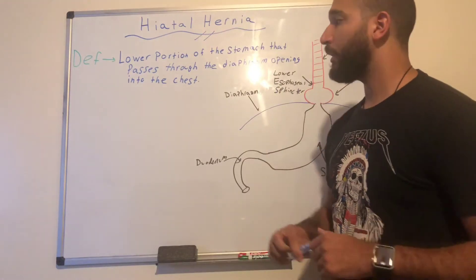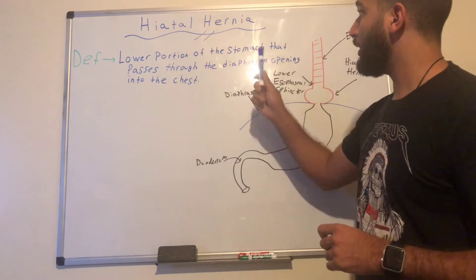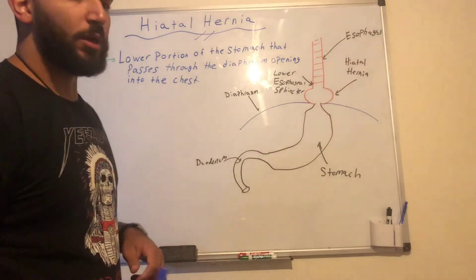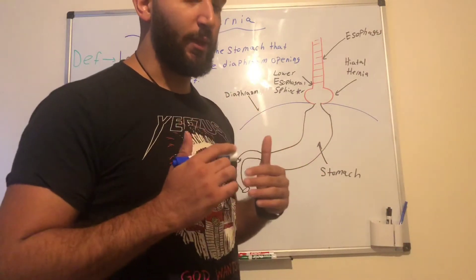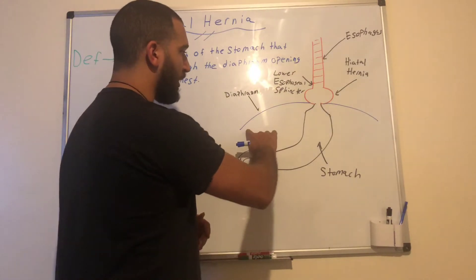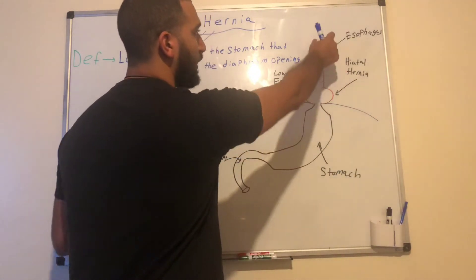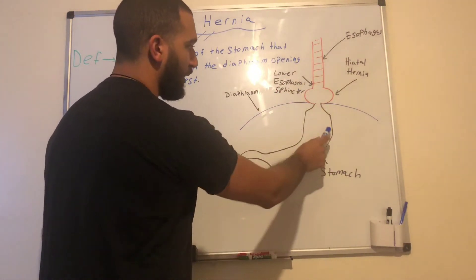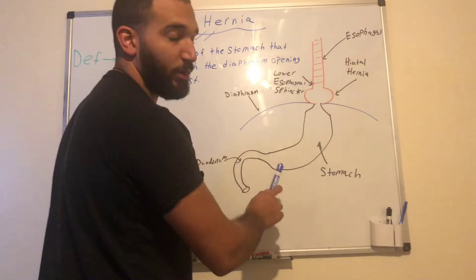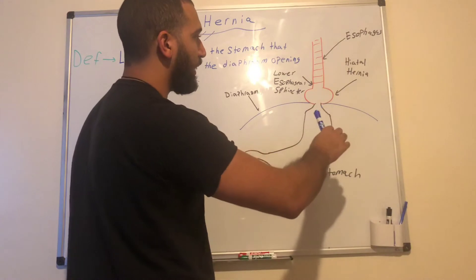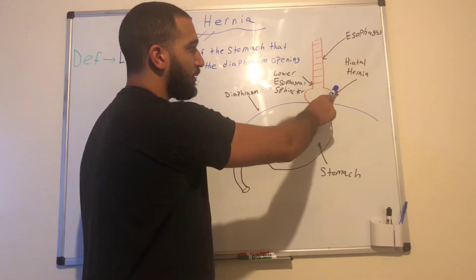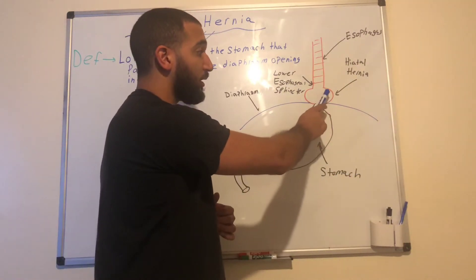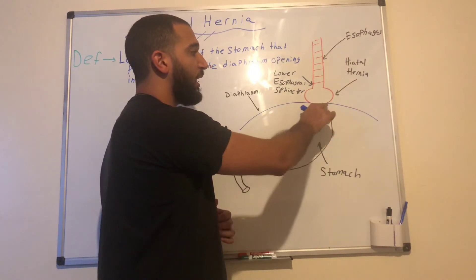So what is a hiatal hernia? A hiatal hernia is when the lower portion of the stomach passes through the diaphragm and leads into the chest. I drew an illustration to demonstrate how that occurs. Here's our diaphragm — the blue line — the top portion is the esophagus, here's our lower esophageal sphincter, here's our stomach, and here's the duodenum.